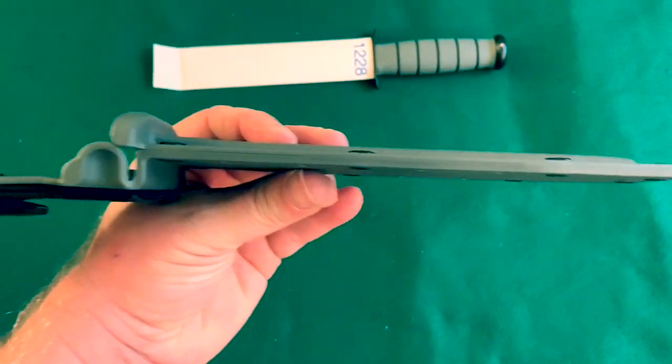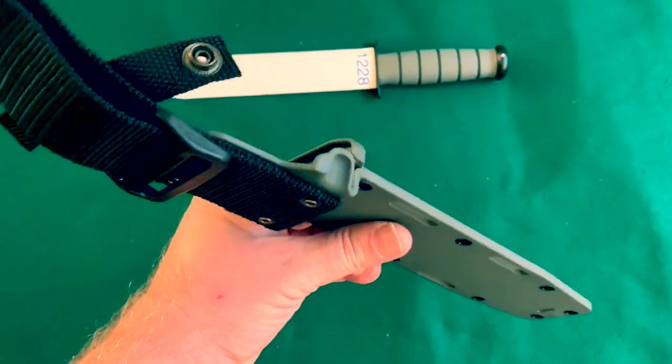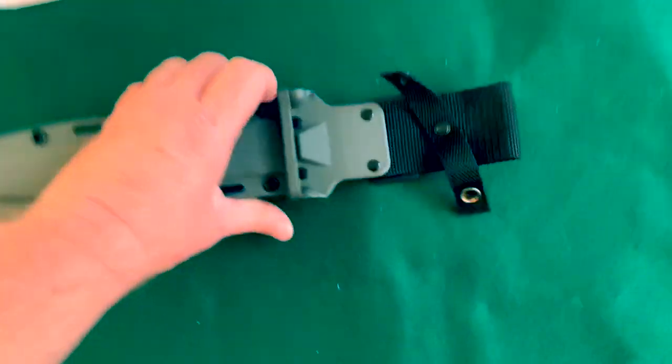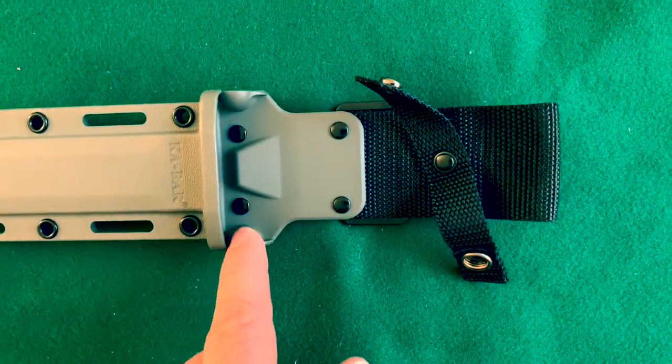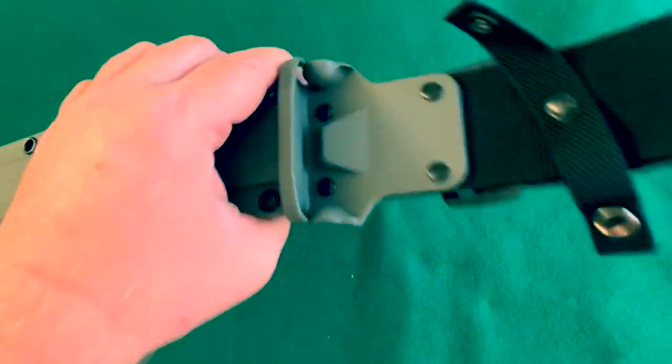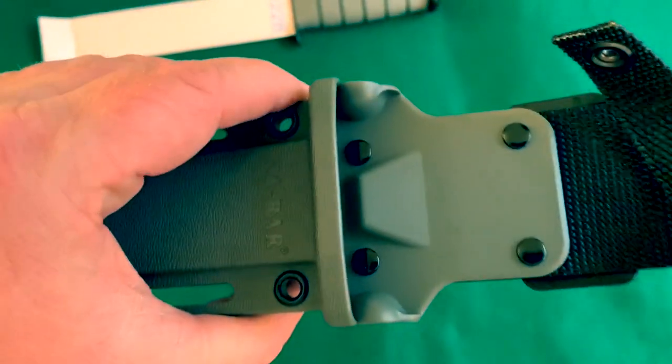There it is, K-bar plastic, kind of like Kydex sheath. Nice thin profile, very nice. Look at that, look at that locking system too. It's like these two little rounded pieces of plastic that the hand guard drops past and then it catches on. That is ingenious.